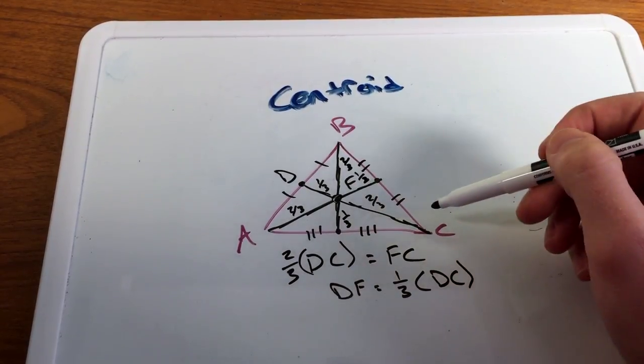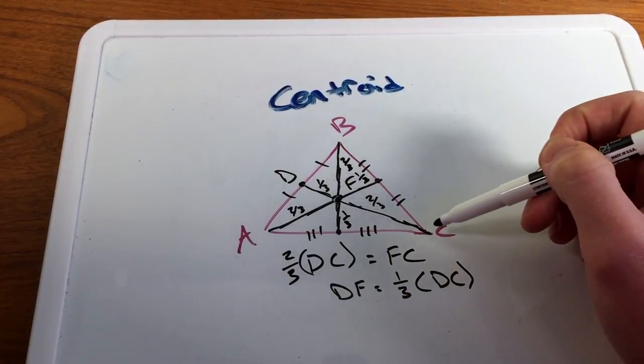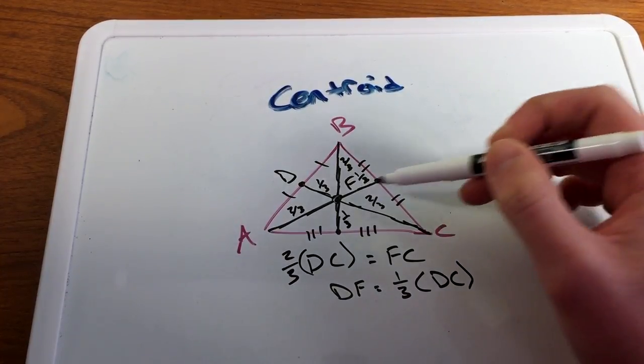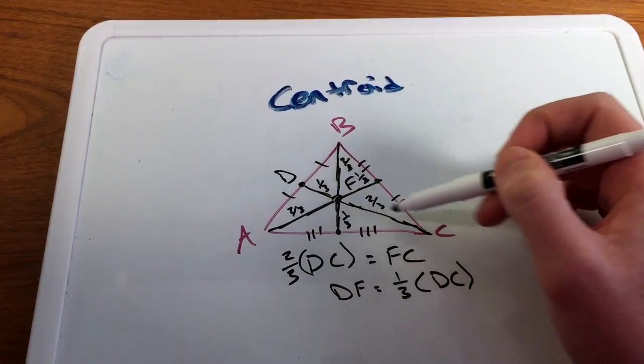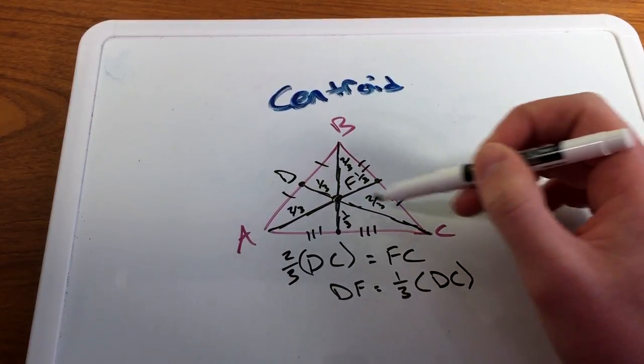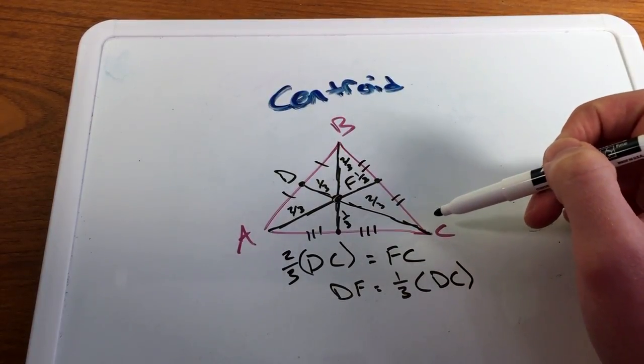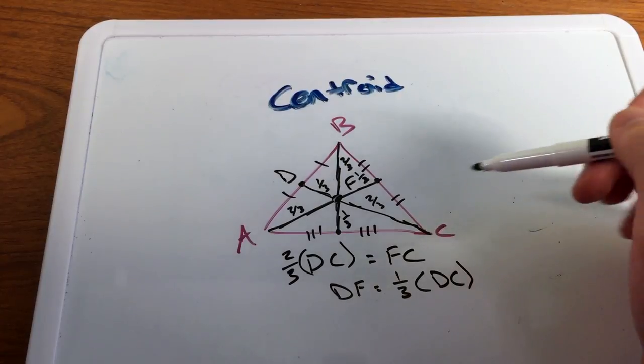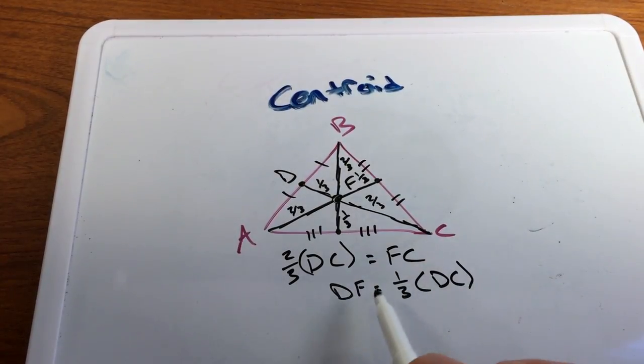And again, the two-thirds portion will always be the portion that connects from the vertex to the centroid itself. That is always going to be the bigger length. So you want to keep that in mind when you're doing these calculations. But again, here's the proper notation of it.